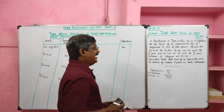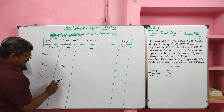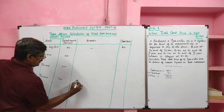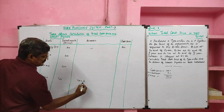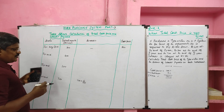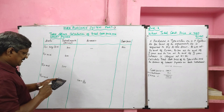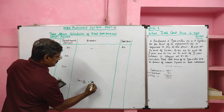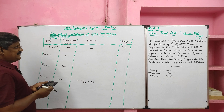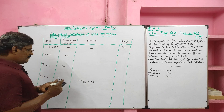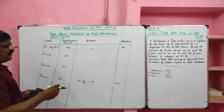Now we will calculate interest starting from the last installment. The third year installment is 700, of which interest = 700 × 5/105 = 33 rupees. So total installment paid is 700, of which 33 rupees is interest. Therefore, 700 minus 33 = 667 rupees is the amount paid toward the principal.